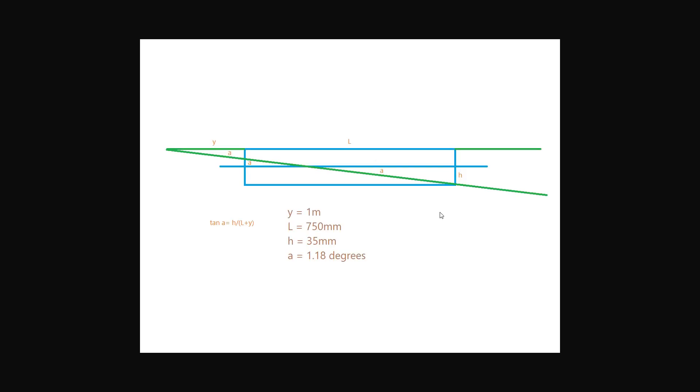And geometry and trigonometry. So I've estimated that my camera was about one meter behind the tube, so y is one meter. The length of the tube is 750 millimeters. The height or the diameter of the tube is 35 millimeters. And that gives us an angle of 1.18 degrees as the total field of view that you can see through this tube from one meter away. Now as you can see, the field of view is dependent on the distance behind the tube as well as the dimensions of the tube.